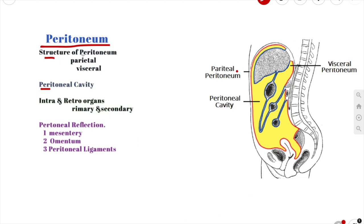While talking about the structure of the peritoneum, we have to remember that the peritoneum consists of two layers which are continuous with each other: the parietal peritoneum and the visceral peritoneum. Both types are made up of simple squamous epithelial cells, and we call them mesothelium.